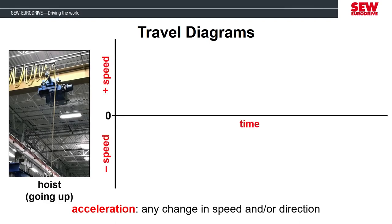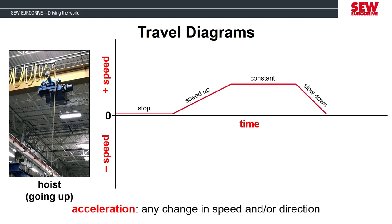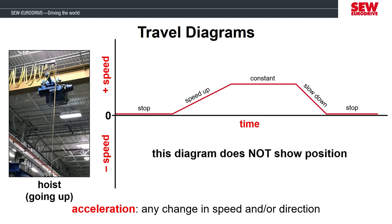The first example we'll look at is a hoist coming up. The hoist can have positive speed or negative speed, with the up direction represented as positive speed. The hoist will start with zero speed and then accelerate to a higher speed until it reaches a constant speed. After a while the motor will decelerate back to a slower speed, which happens to be stopped in this example. This diagram is shown over time, so this process can happen as quickly or slowly as the machine requires, and doesn't represent the distance of the position change.